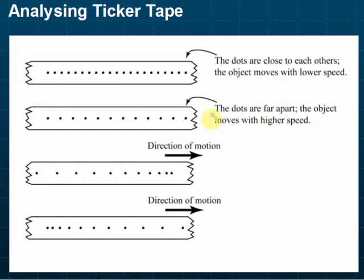So the object moves with higher speed. That is how we analyze the ticker tape. Remember: if the dots are very close to each other, it's slow, and if they are far from each other, then it's faster.